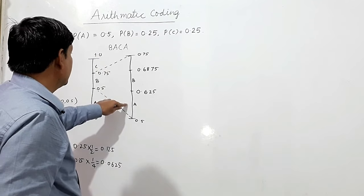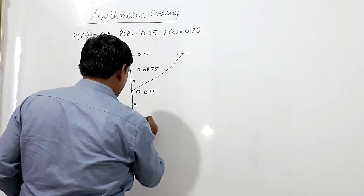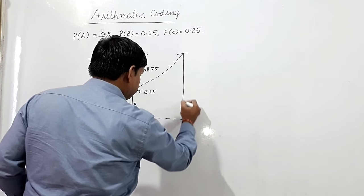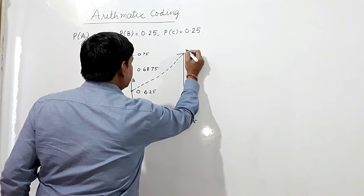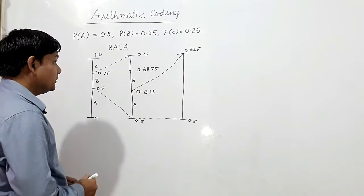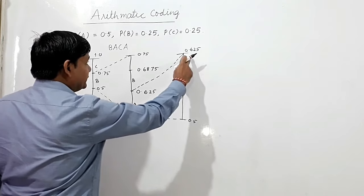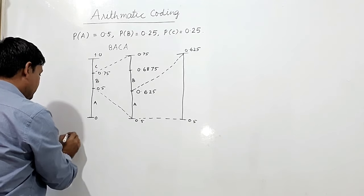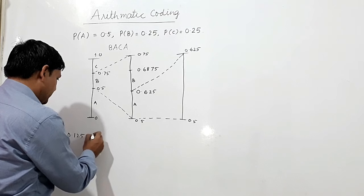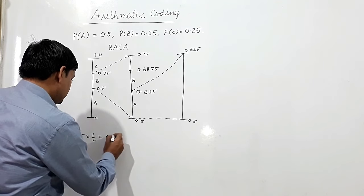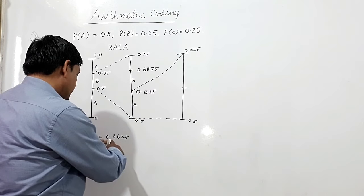Now for the second symbol A, I take A's interval with lower limit 0.5 and upper limit 0.625. The width is 0.625 minus 0.5, which equals 0.125. Multiplying by probability of A (one half) gives 0.0625, so A's new sub-interval lower limit is 0.5 and upper limit is 0.5 plus 0.0625, which is 0.5625.